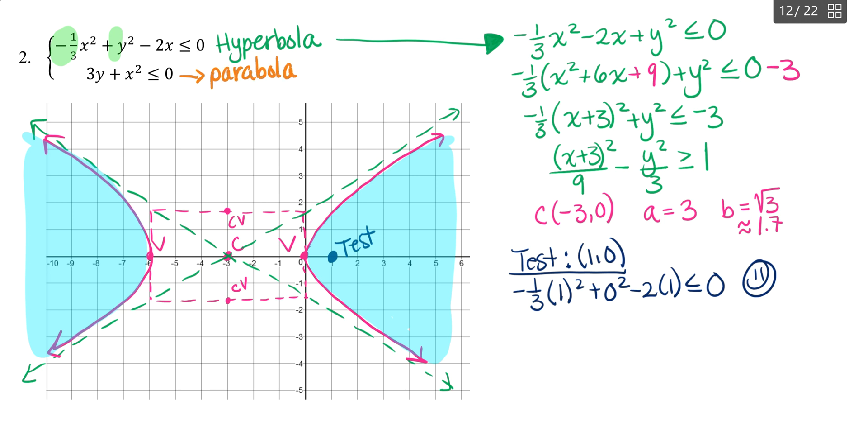So we want to put this into the standard form for a parabola, which is pretty simple here. So we move over the x squared and divide by three. We get y is equal to negative one third x squared. So we know our vertex is located at zero zero. And we also know that it's opening down. And our a value is negative one third. So we can use my favorite strategy. We graph the vertex of zero zero.